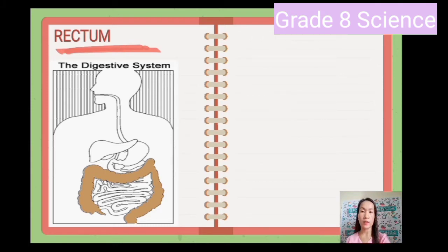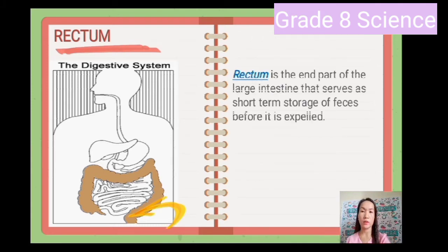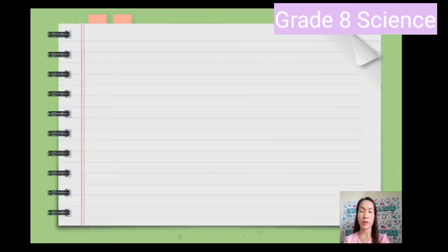Next is the rectum. The rectum is the end part of the large intestine that serves as short-term storage of feces before it is expelled. And those are the parts that can be found in the gastrointestinal tract.